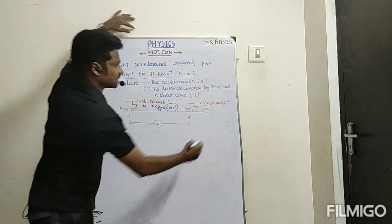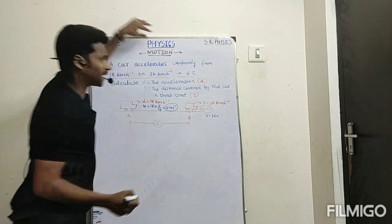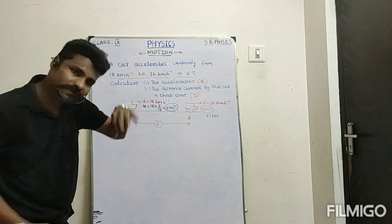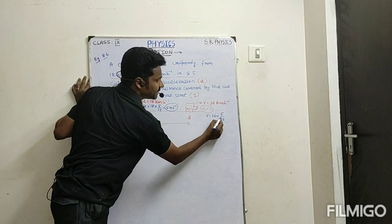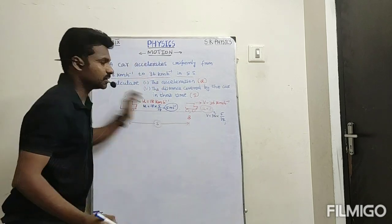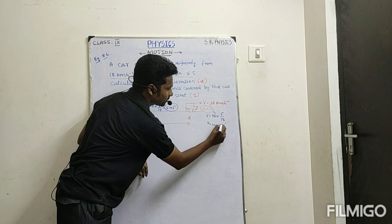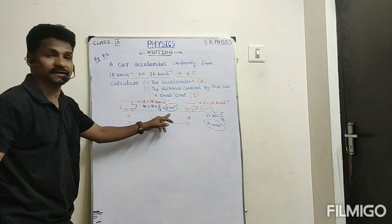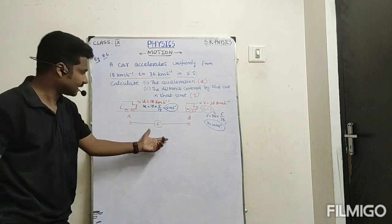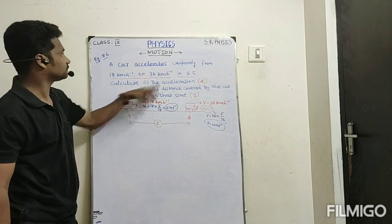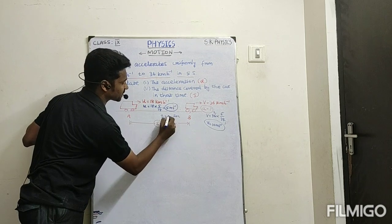Now find the final velocity. Final velocity V equals 36 into 5 by 18. Since 18 goes into 36 two times, we get 2 into 5, that is 10. So V equals 10 meter per second. Initial velocity is 5 m/s, final velocity is 10 m/s, and time T is 5 seconds.